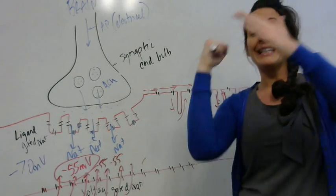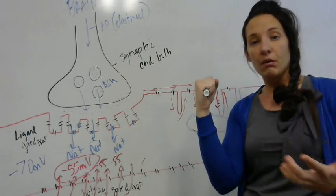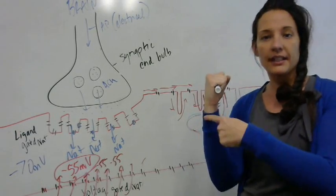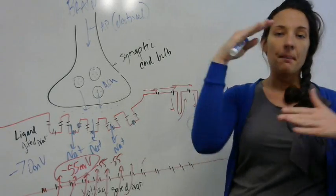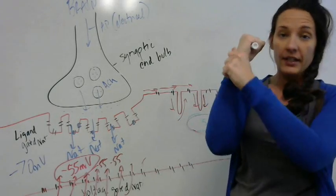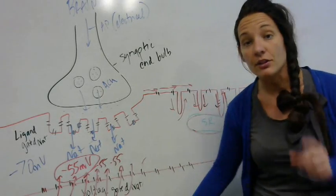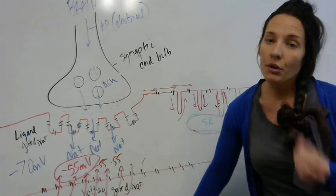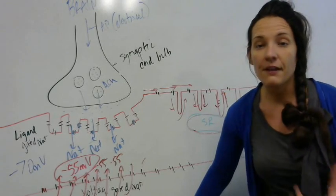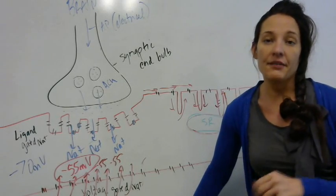Another ATP comes in and binds to myosin. I can detach at that point, then we go back to step one. I'll hydrolyze the ATP, come up and bind again, power stroke, detach. This thing happens and happens and happens. In order for this to be effective for the sliding filament, I have to have ATP.